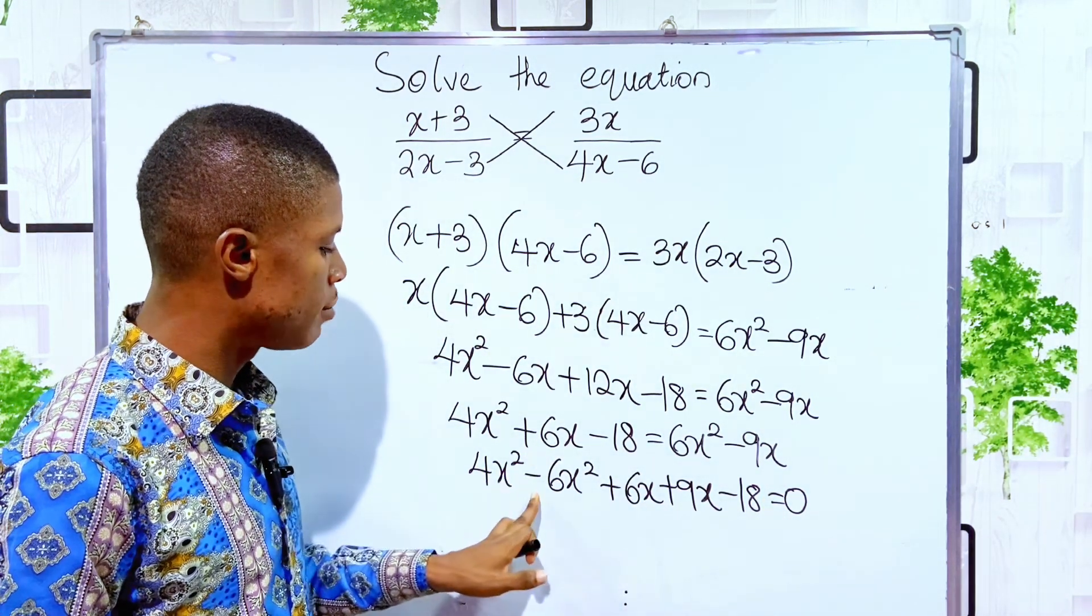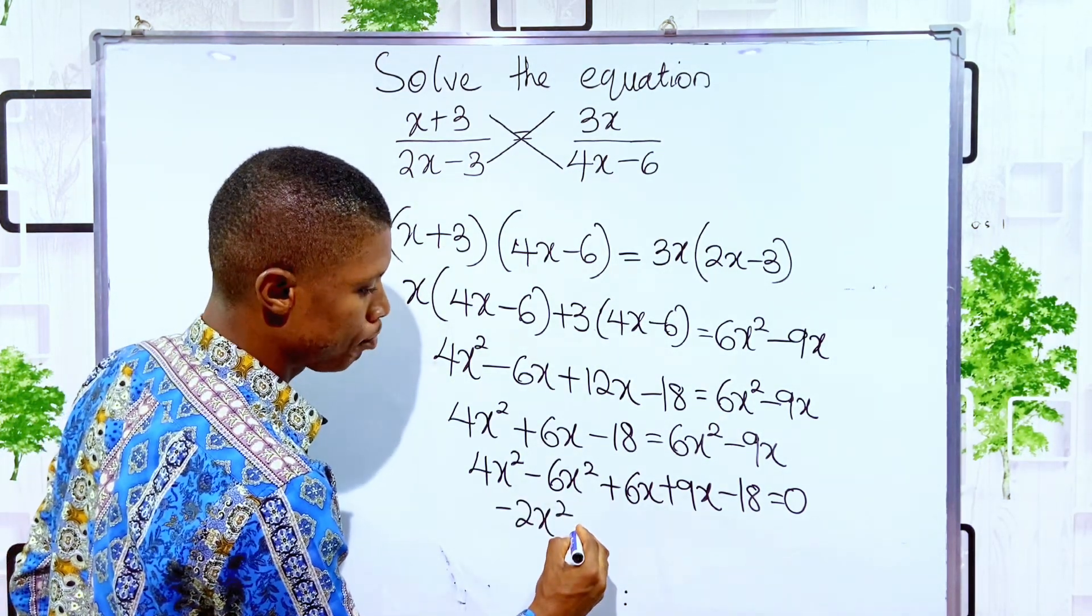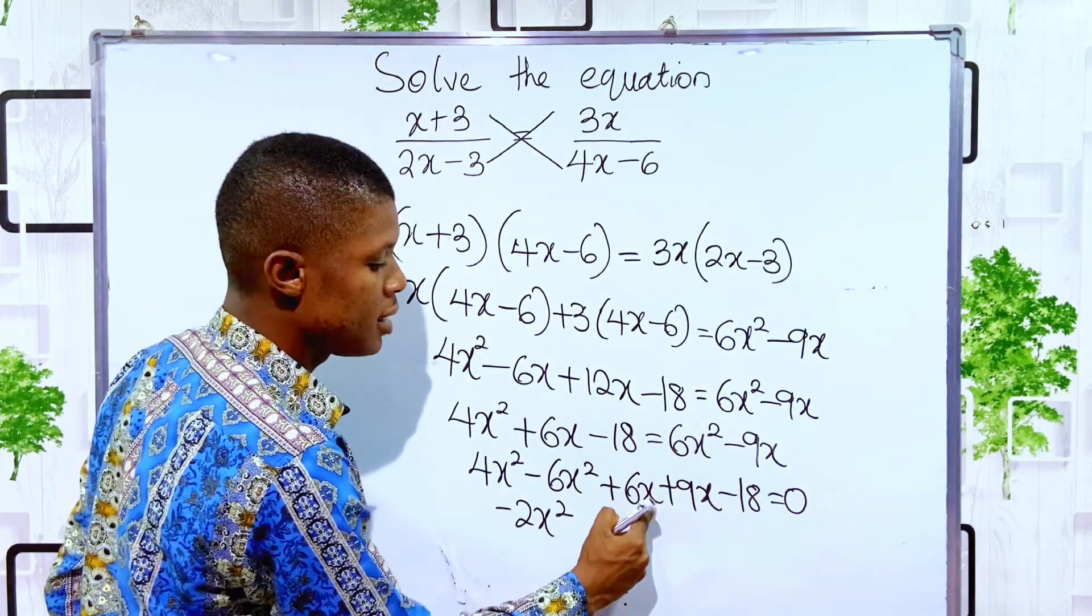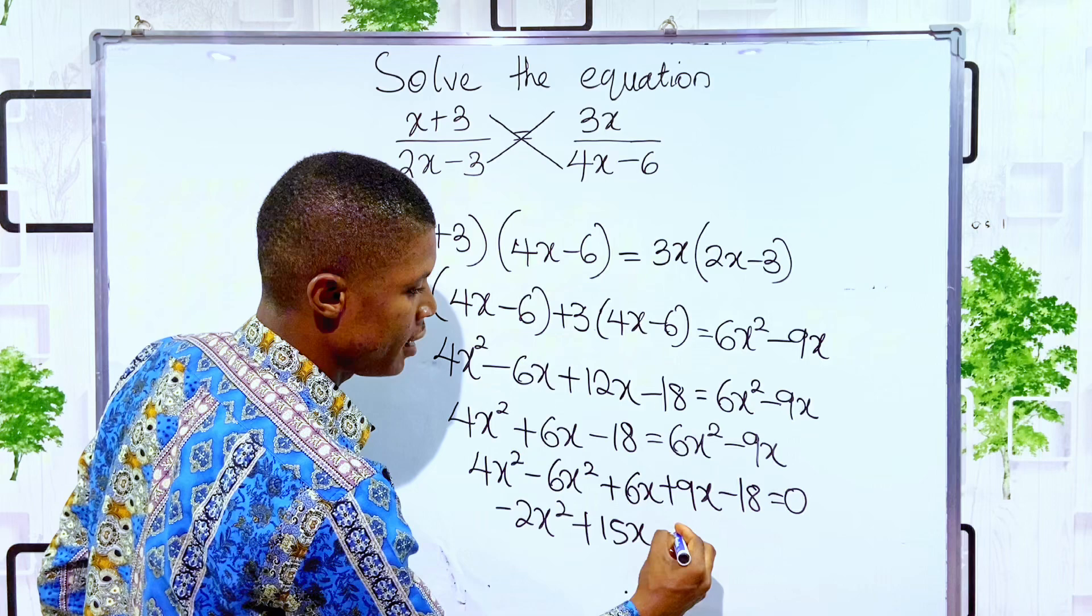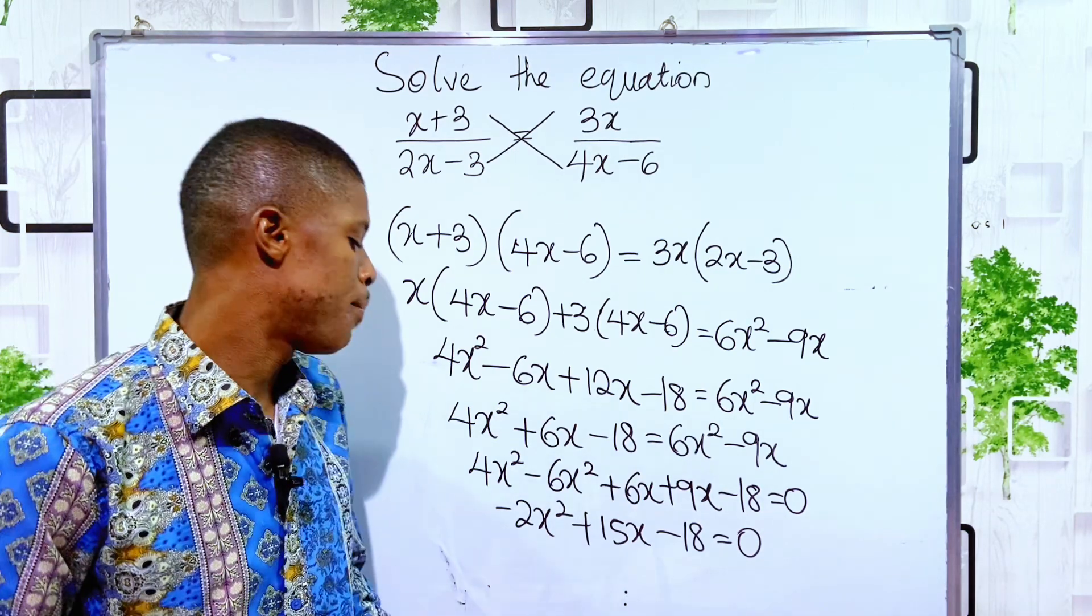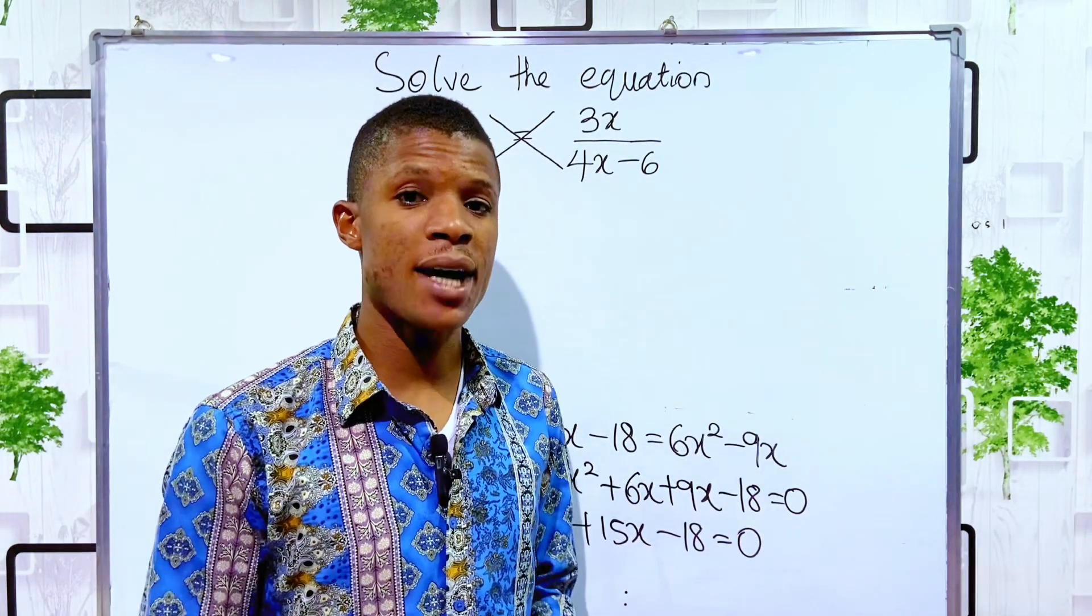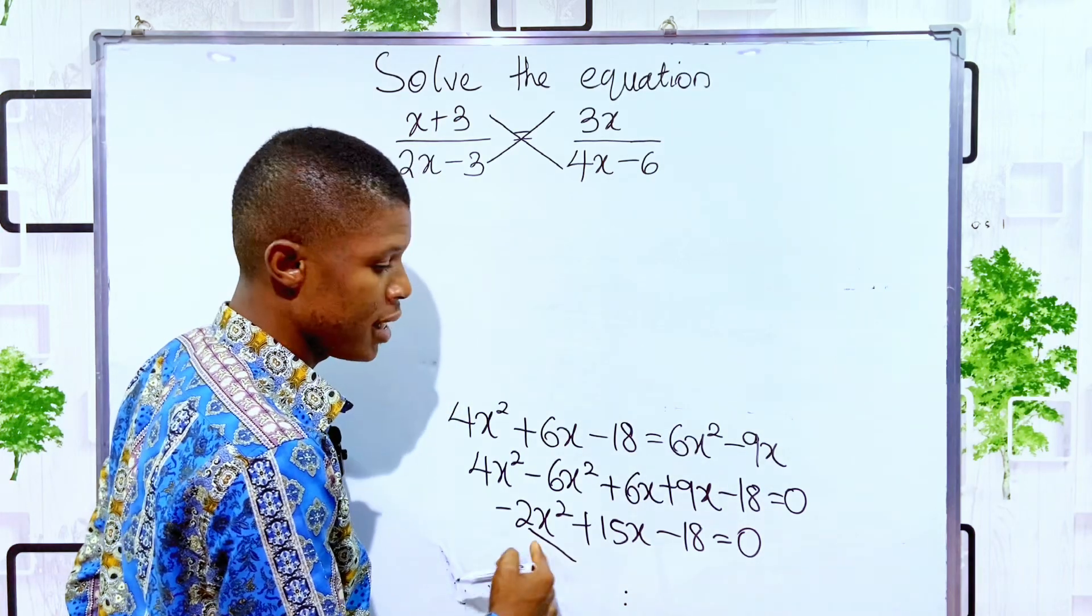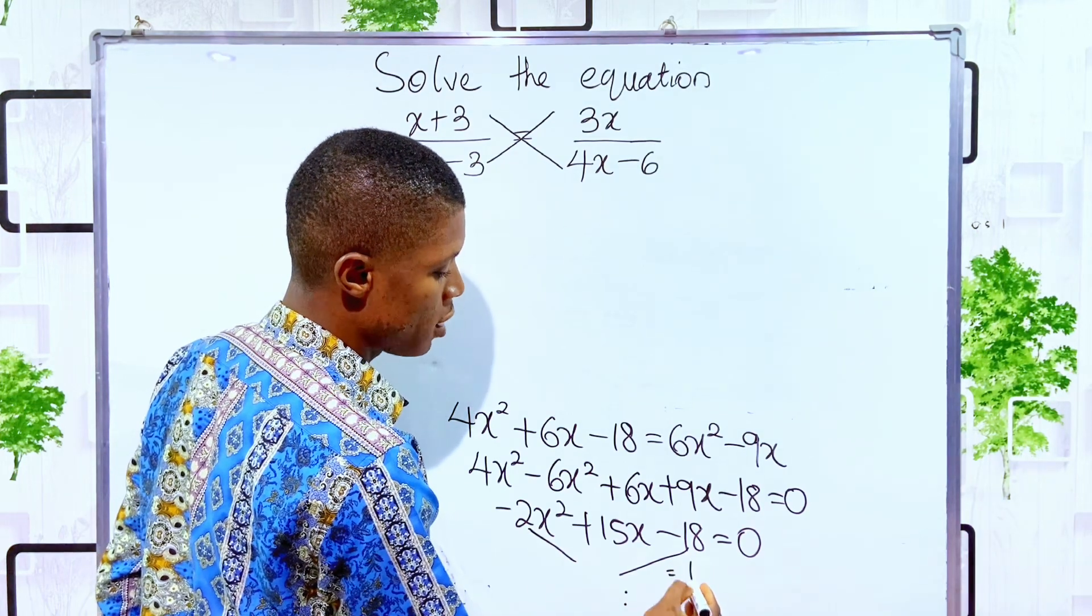Then, 4x squared minus 6x squared is minus 2x squared. Then, 6x plus 9x will give you plus 15x minus 18 is equal to 0. Then, basically, this is now a quadratic equation. For us to solve by factorization, we have to multiply the initial term minus 2 to the last term, minus 18. And that will give us plus 36.